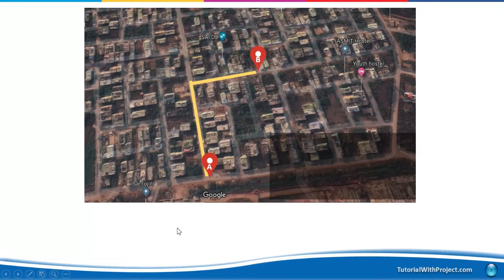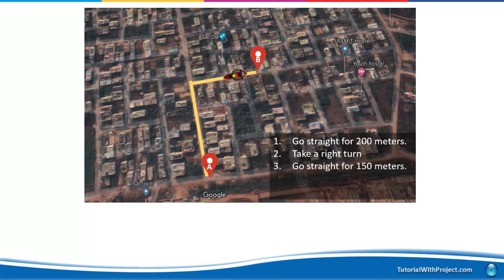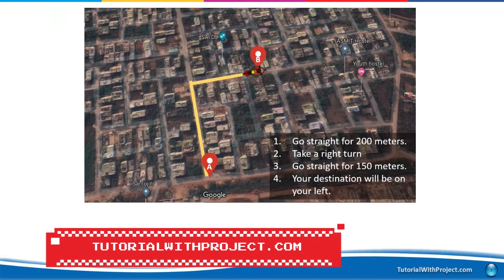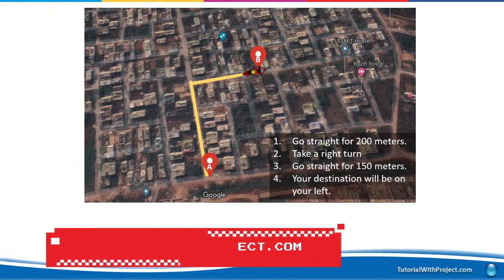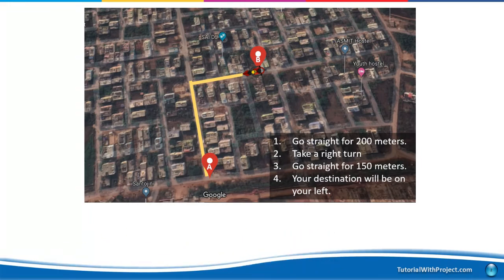You would give step-by-step instructions: go straight for 200 meters, take a right turn, go straight for 150 meters, and your destination will be on your left. Using these step-by-step instructions, they will reach from point A to point B. This set of instructions is known as a program.